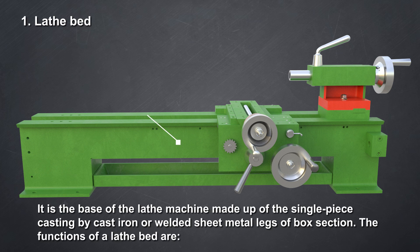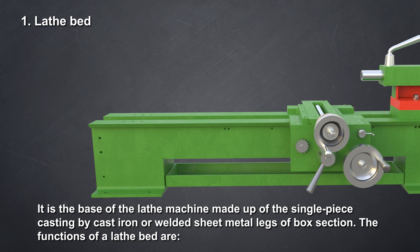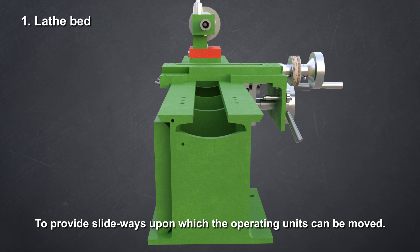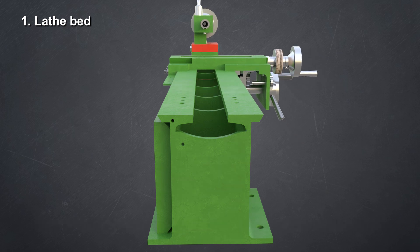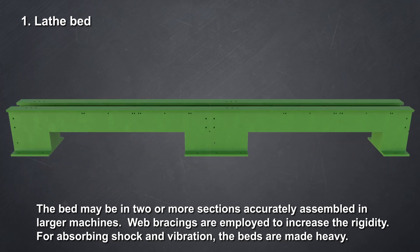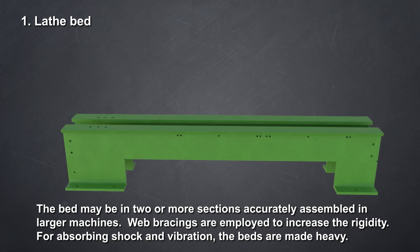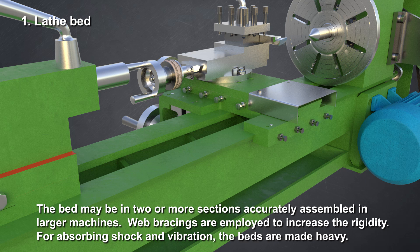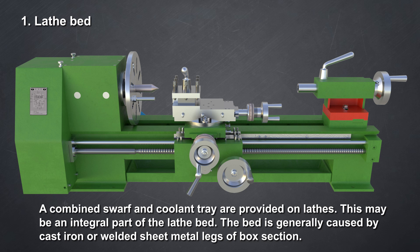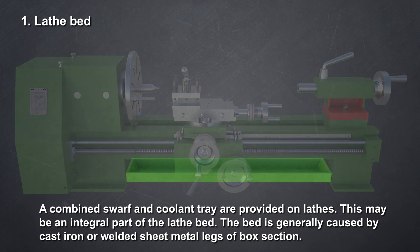Lathe bed. It is the base of the lathe machine made up of single piece casting by cast iron or welded sheet metal legs of the box section. The functions of a lathe bed are to locate the fixed units in accurate relationship to each other, and to provide slideways upon which the operating units can be moved.